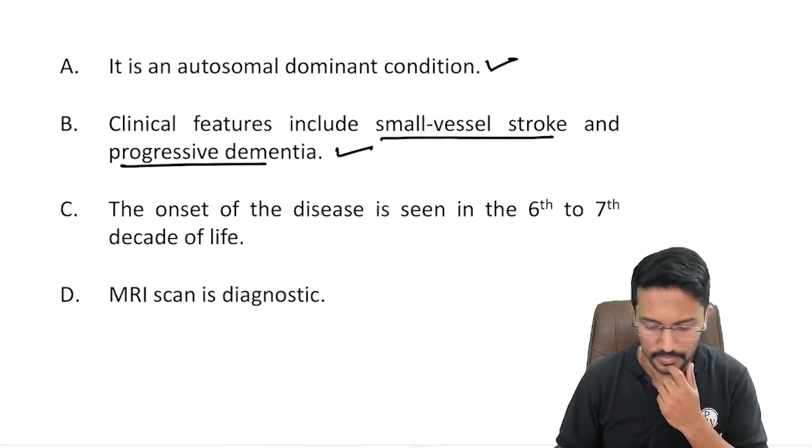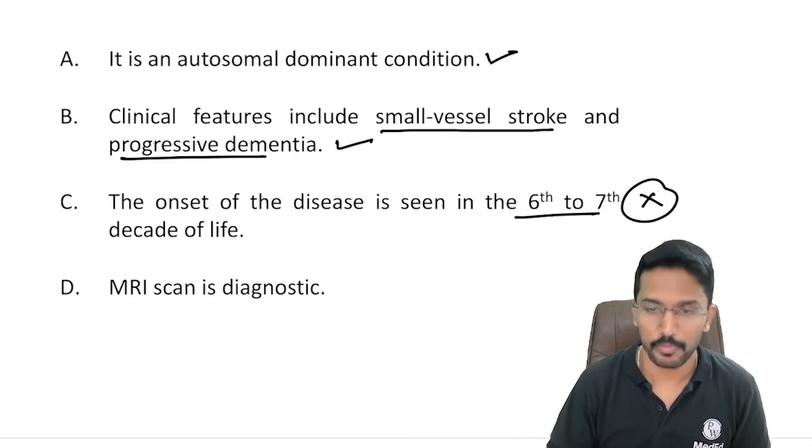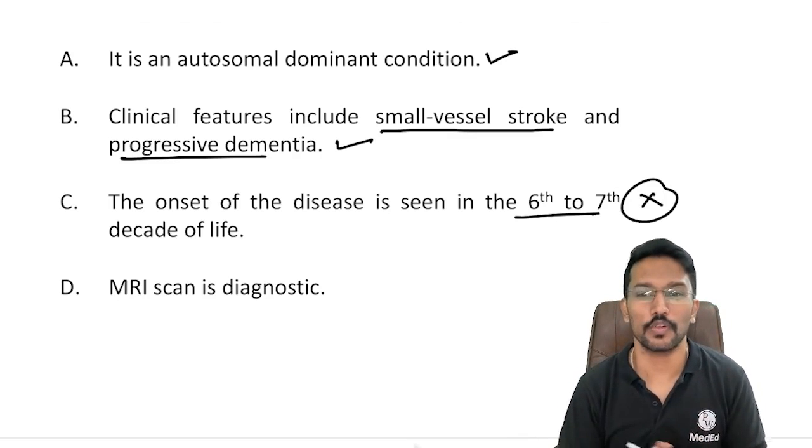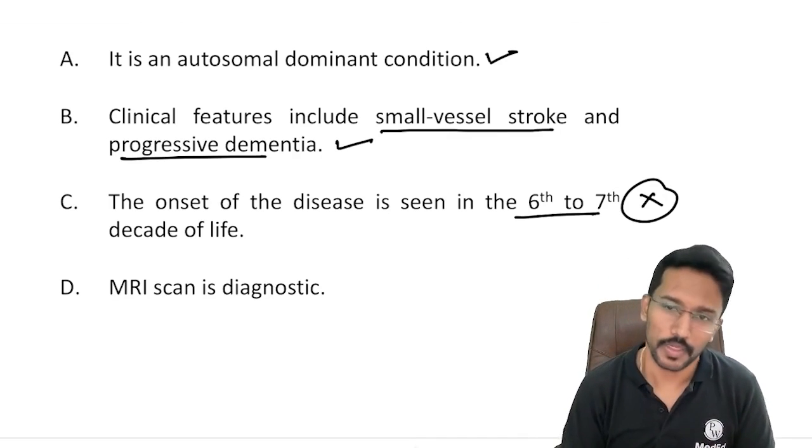Now the onset of disease is seen in sixth or seventh decade of life is false. Remember it is one of the important causes for stroke in young, and when you say stroke in young, development of stroke before 45 years of age.